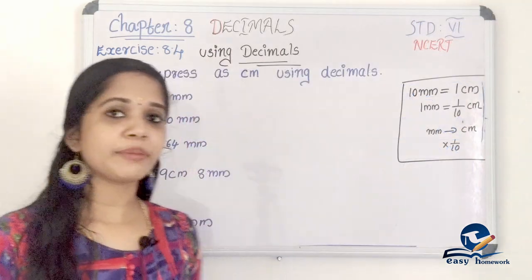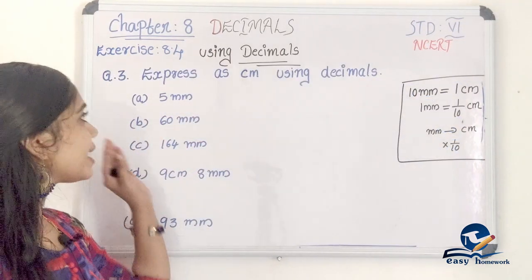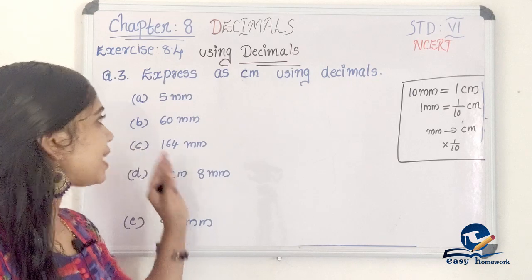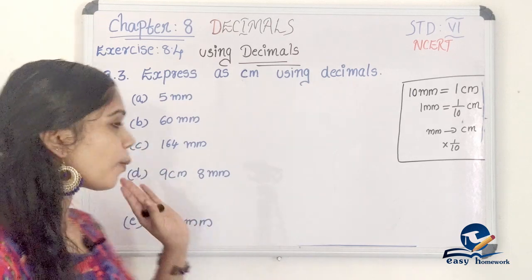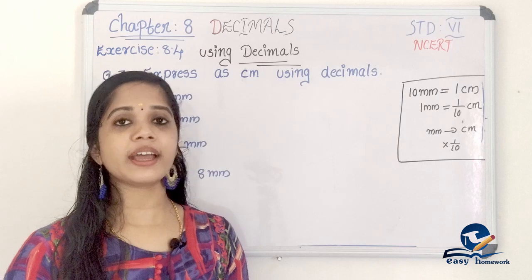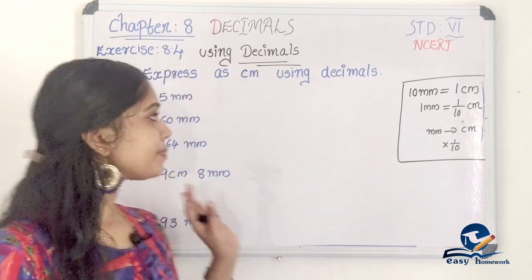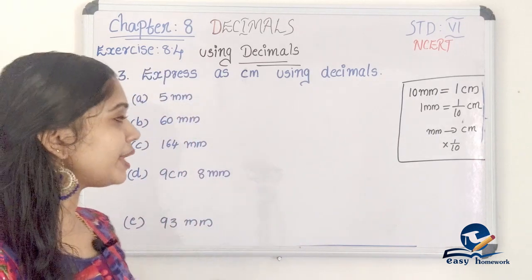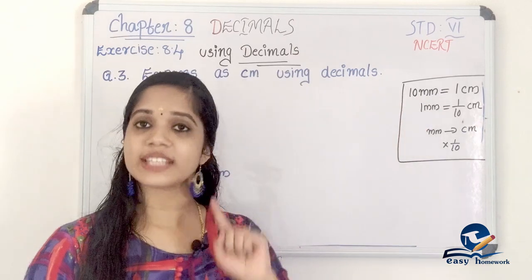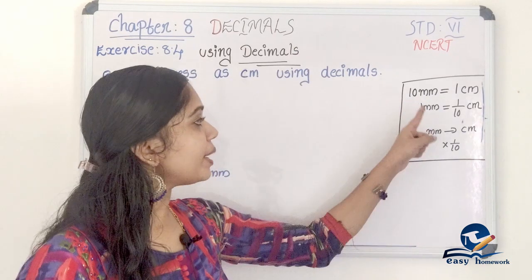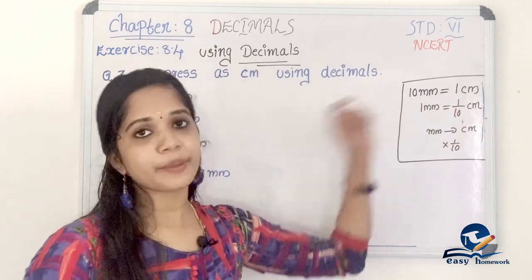Third question: Express as centimeters using decimals. Here 10 millimeters equals 1 centimeter, so 1 millimeter equals 1 by 10 centimeter.